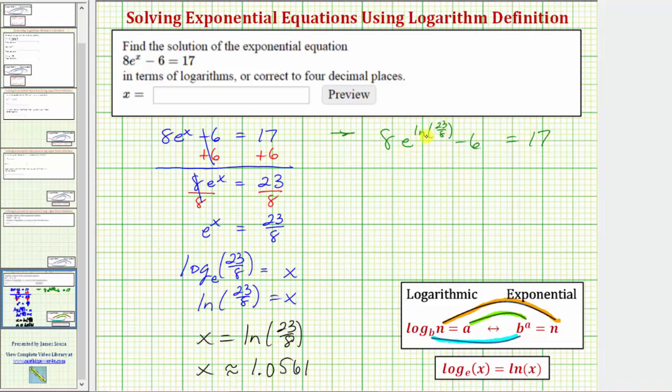Let's simplify e raised to the power of ln(23/8) because the base is e and it's raised to the power of natural log, which is log base e, this simplifies perfectly to 23/8. So we have 8 times 23/8 minus 6 equals 17.